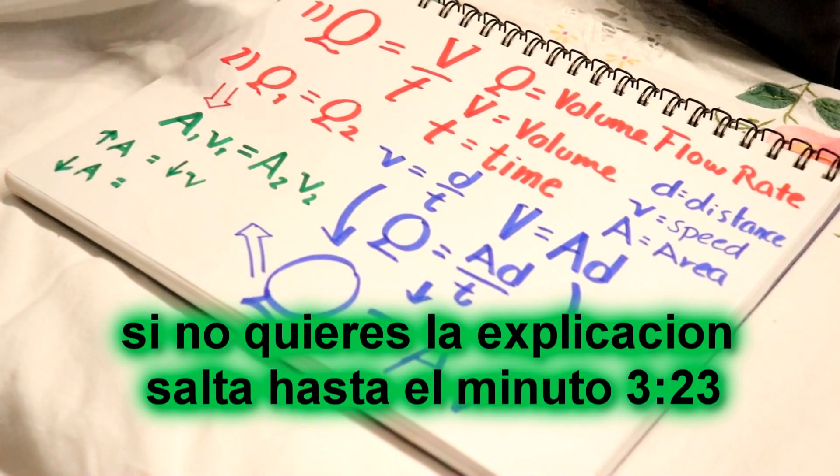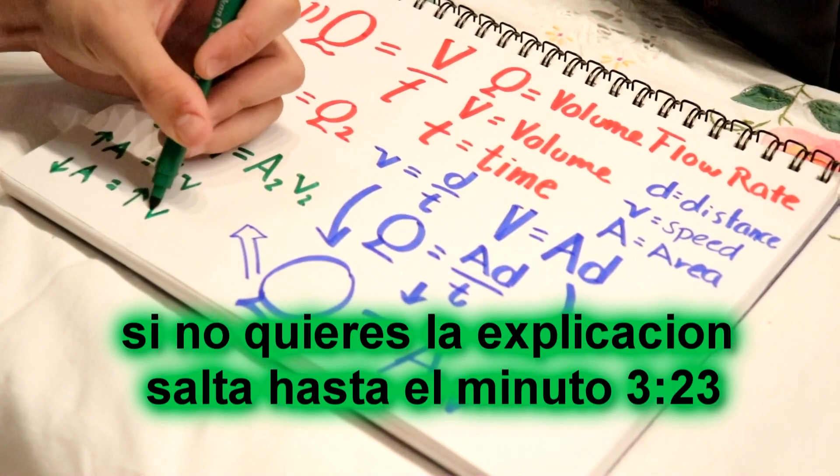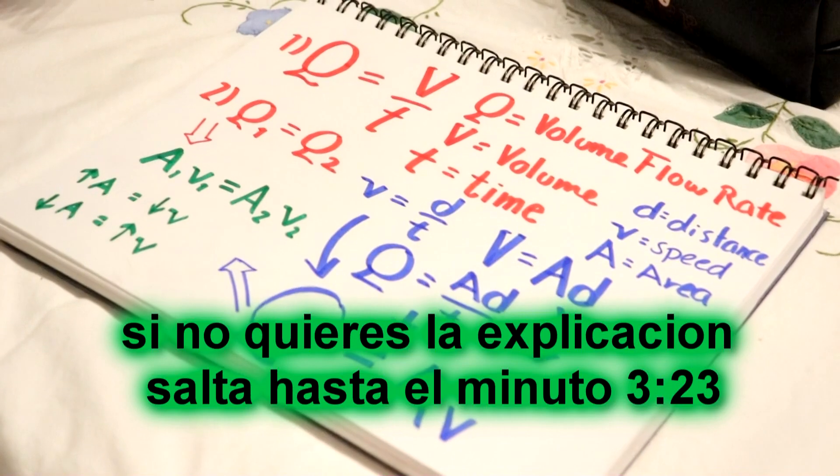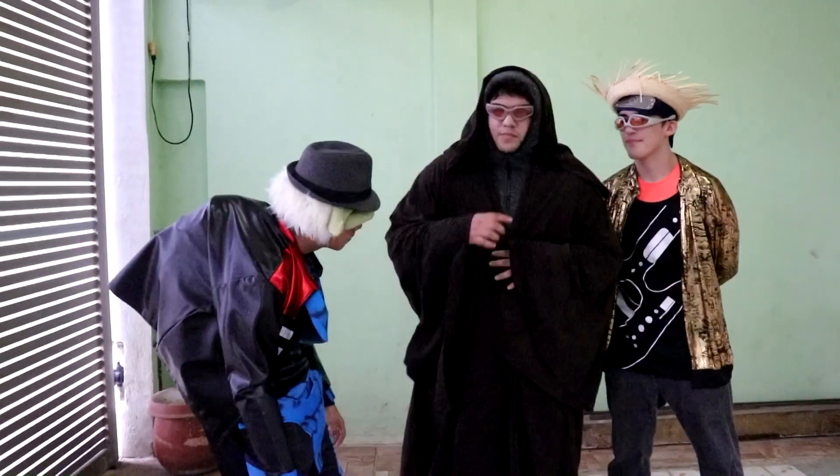The larger the area of a section, the slower the liquid will flow through there. The smaller the area, the faster the liquid will flow.